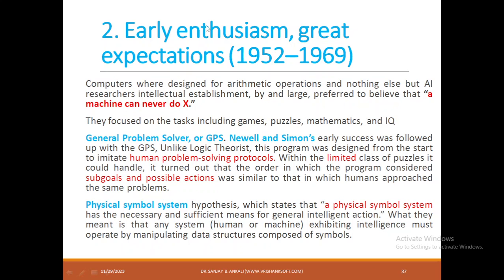Let us go to the next decade: Early Enthusiasm, Great Expectations, 1952 to 1969. When computers were designed, people thought they were built to do one particular task. But AI researchers started using computers to solve games, puzzles, mathematics and IQ problems — this laid a foundation for AI. Newell and Simon proposed a General Problem Solver, thinking like a human being, using sub-goals and possible actions to solve any given task.